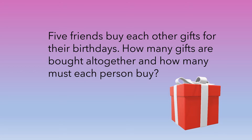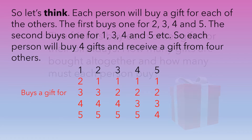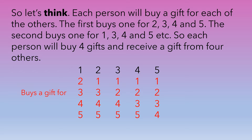So let's think — each person will buy a gift for each of the others. The first buys one for two, three, four, and five. The second buys one for one, three, four, and five, and so on. So each person will buy four gifts and receive a gift from four others.